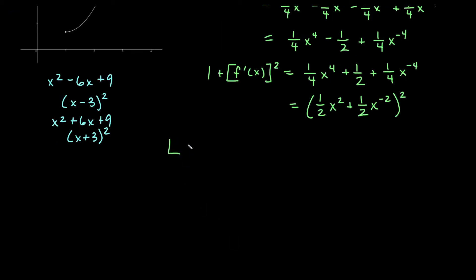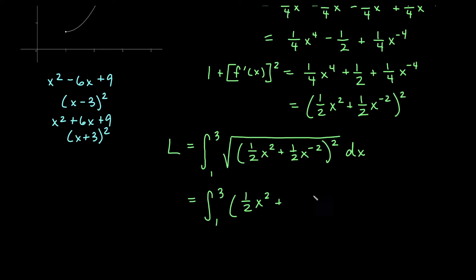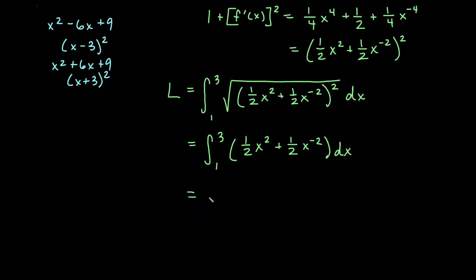So let's remember that our length now is from 1 to 3 and we'll have the square root of 1 half x squared plus 1 half x to the negative two all squared dx. So the square and the square root will reduce one another with these positive terms here. So we will get integral from 1 to 3 of simply 1 half x squared plus 1 half x to the minus two. So these are now again just power rules, nothing fancy to do here, very convenient factoring has occurred.